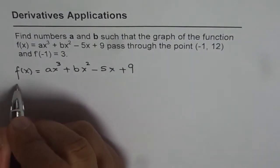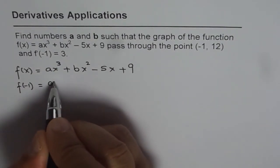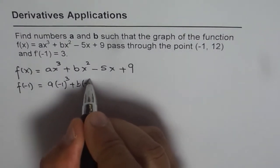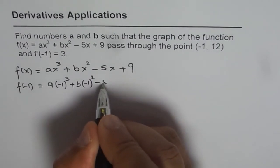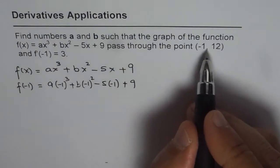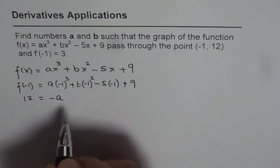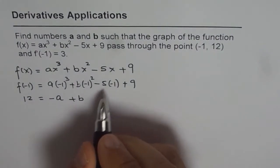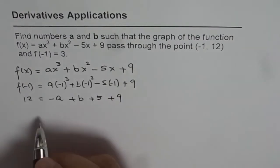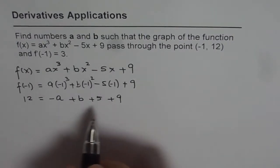So let's use the first condition which is f(-1) equals, so if I place minus 1 here I get a times (-1)³ plus b times (-1)² minus 5 times (-1) plus 9. So f(-1) is given to us as 12, so 12 equals -a + b plus 5 and plus 9. So bringing the constants on one side, we can say this is 9, 9 plus 5 is 14.